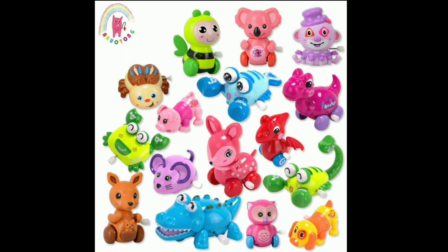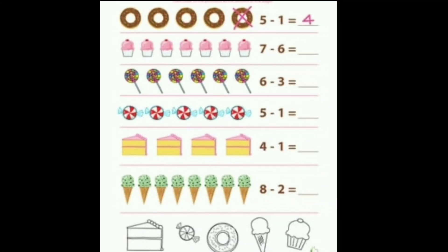Now using different pictures. What can you see here? How many donuts are there? Let's count all together: 1, 2, 3, 4, 5. Let's see the equation: 5 minus 1 is equal to 4.